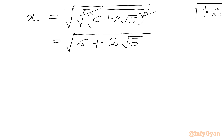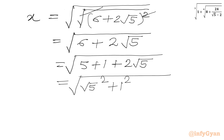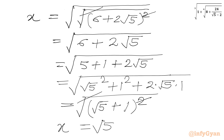Now again we can split 6 as 5 plus 1 and then we have 2 root 5. Now 5 can be written as root 5 whole squared, and 1 we can write as 1 whole squared, and then we have 2 times root 5 times 1. So this is a squared plus b squared plus 2ab, giving us the square root of root 5 plus 1 whole squared. Again the square root and square cancel, giving x equal to root 5 plus 1.